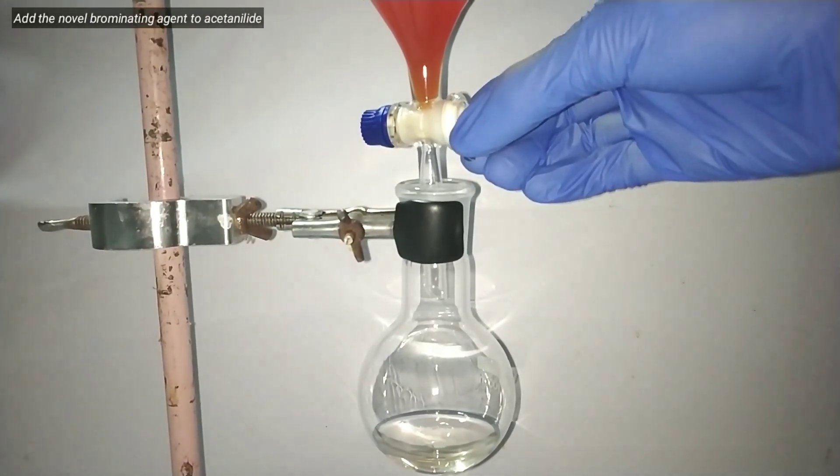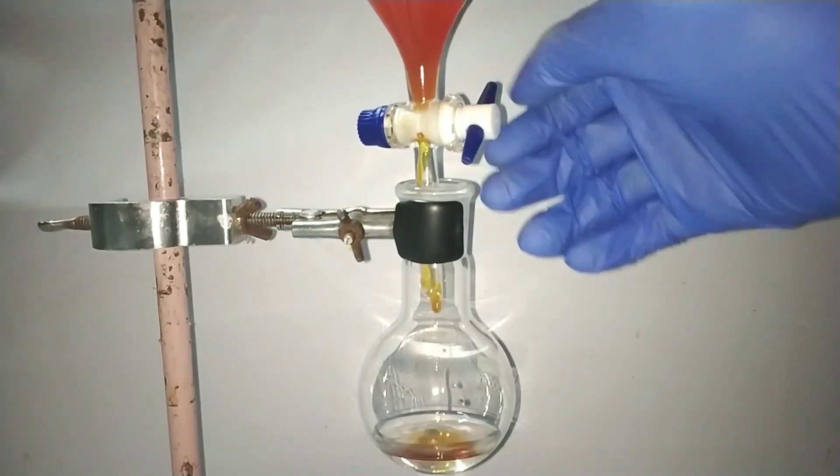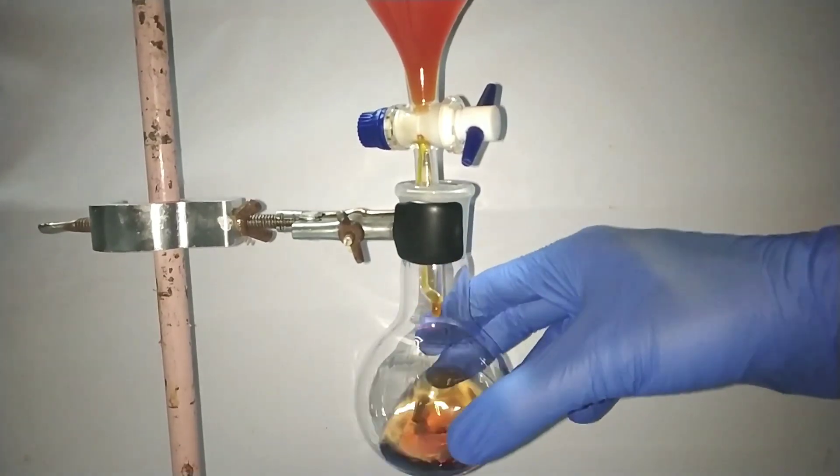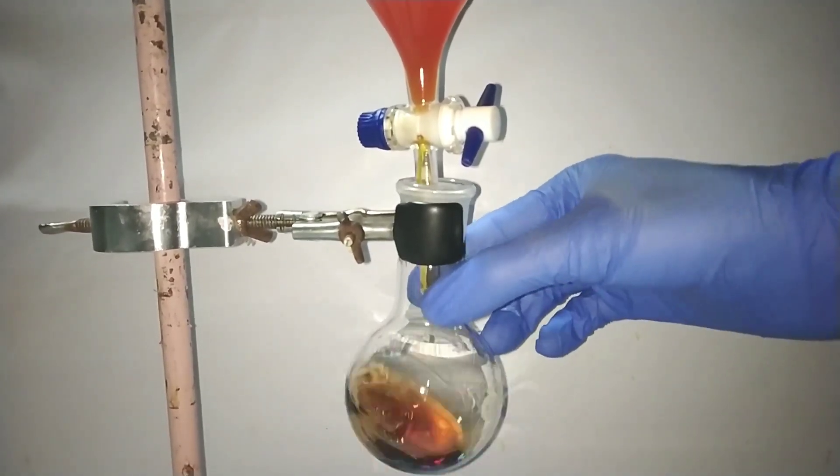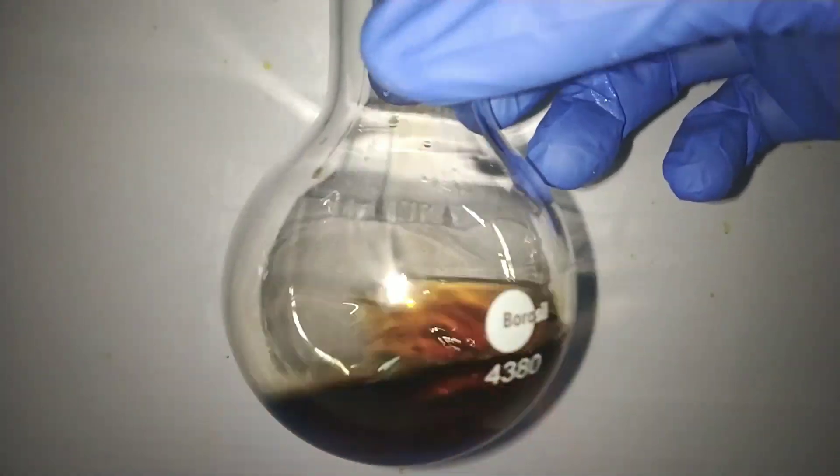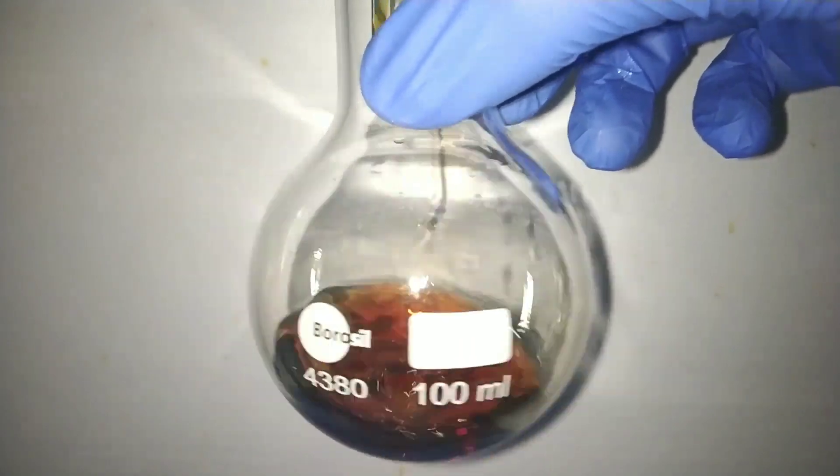Now we add the brominating agent in the separatory funnel and we slowly open the knob so that the ceric ammonium nitrate and sodium bromide mixture falls very slowly dropwise to the acetanilide solution. Along with the addition swirl the flask to mix the contents well.